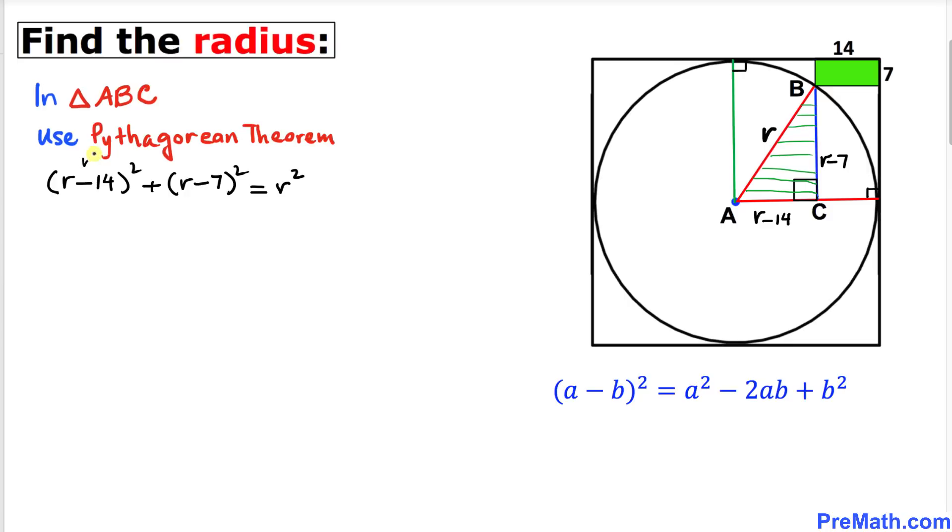Now let's expand this binomial by using the formula (a minus b) squared. This is going to give us r squared minus 28r plus 196, plus we are going to use that formula on this one as well. That is going to give us r squared minus 14r plus 49 equals r squared.